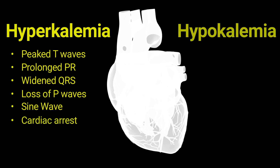Hypokalemia refers to low levels of potassium in the blood. ECG changes in hypokalemia typically include flattened T waves. One of the earliest changes observed in hypokalemia is the flattening of T waves — they may appear shallow or have an inverted appearance.